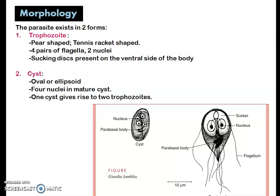Coming to the morphology, Giardia exists in two forms: the trophozoite and the cyst. The trophozoite is pear-shaped, with a resemblance to a tennis racket. It has four pairs of flagella, two nuclei, and a ventral adhesive sucking disc by which it attaches to the epithelium of the small intestine.